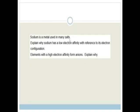It says, Sodium is a metal used in many salts. Explain why sodium has a low electron affinity with reference to its electron configuration. Elements with high electron affinity form anions. Well, anions are negative ions. Obviously, if you have a high electron affinity, it means you easily attract electrons. And if you easily attract electrons, then you're going to become an anion. So, that's pretty easy.